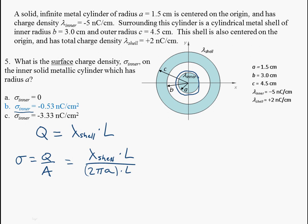Nicely the L's cancel out, as I kind of need them to since I could have chosen any number for L there. And I get it's just going to be lambda shell divided by 2 pi times a.